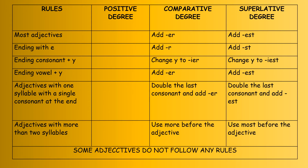Rule four: if the ending is a vowel plus -y, you add -er and -est without changing to i. Rule five: for adjectives with one syllable ending in a single consonant, double the last consonant — for example, big, bigger, biggest. Rule six: for adjectives with more than two syllables, use 'more' and 'most' before the adjective. And some adjectives do not follow any of these rules.